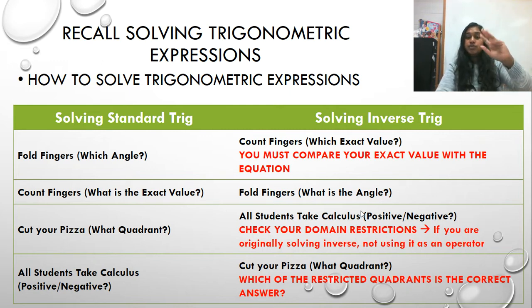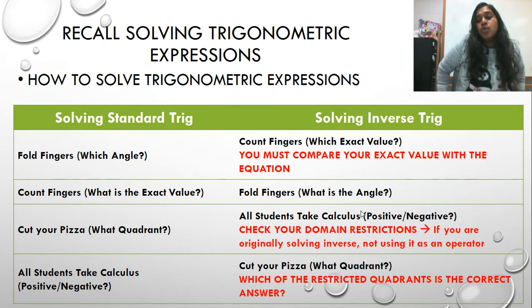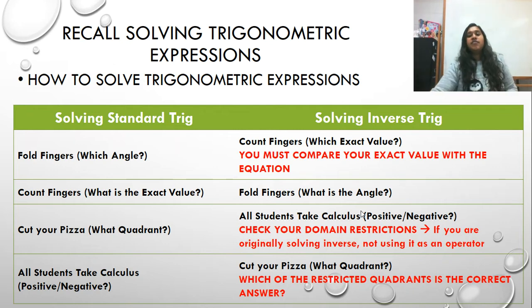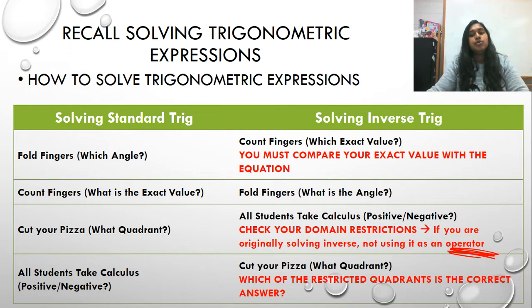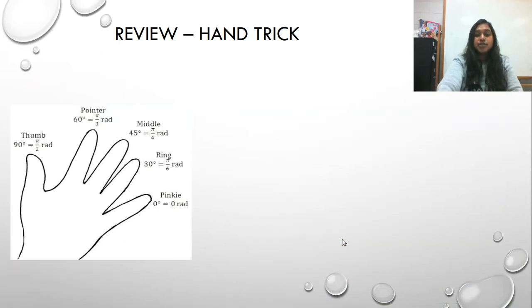If you're solving standard, you fold your fingers, you count the fingers, you figure out which quadrant you're in, and then you figure out whether you're positive or negative. If you're solving an inverse, then you do the opposite, but you're going to count your fingers, then you're going to fold them, then you're going to figure out whether you're positive or negative, and then decide what quadrant that is. So, just to review, for that hand trick, this is the hand, this is how you determine positive and negative, and finally, these are the formulas for that hand trick.